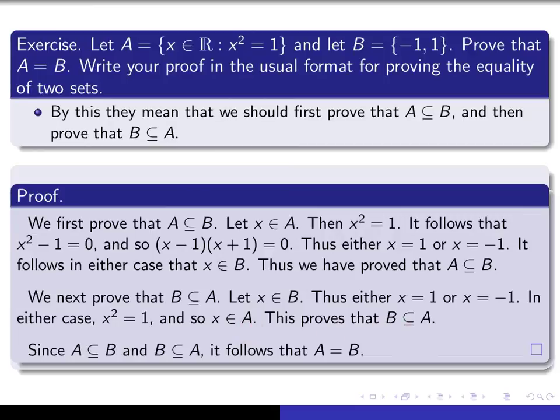And then to summarize, I say, since A is a subset of B and B is a subset of A, it follows that A is equal to B. Okay, so this is really a very typical way of proving the equality of two sets. So please follow this kind of a format when asked to do such a thing.